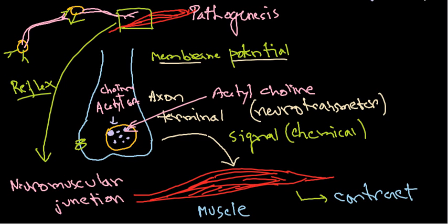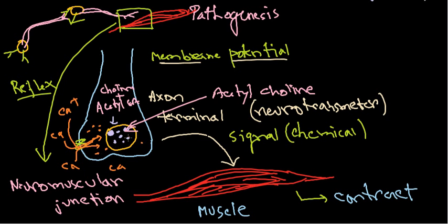Any change in membrane potential gives rise to an influx of calcium ions inside. There are many calcium ions outside, and after receiving the signal, there is a rapid influx of calcium ions inside. These calcium ions then tell the vesicle to fuse with the axon terminal membrane, causing the release of acetylcholine outside.